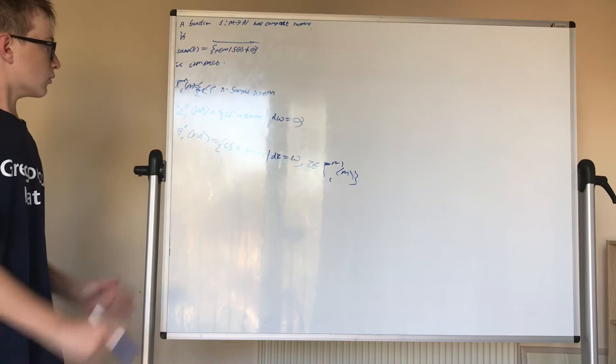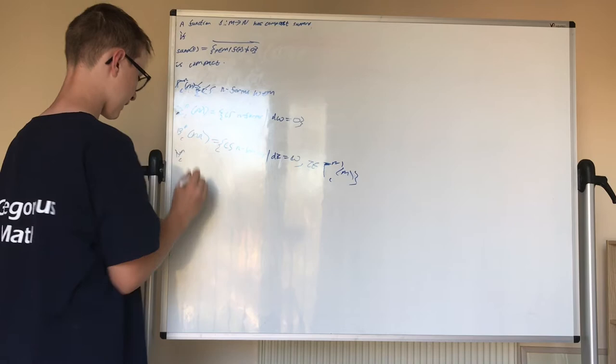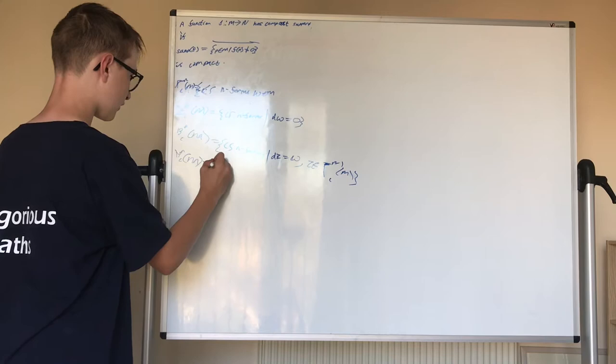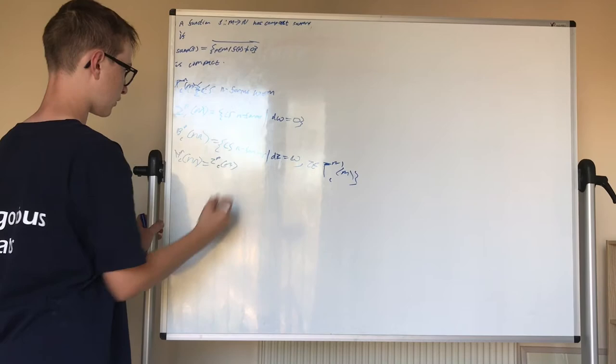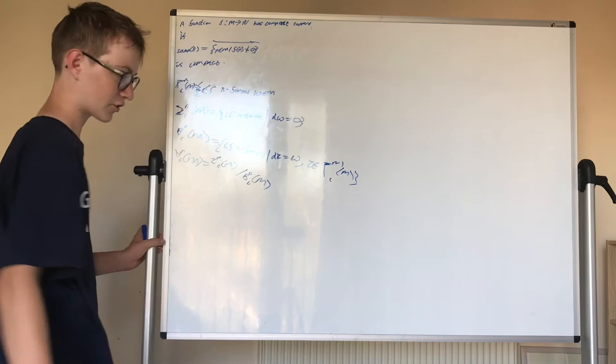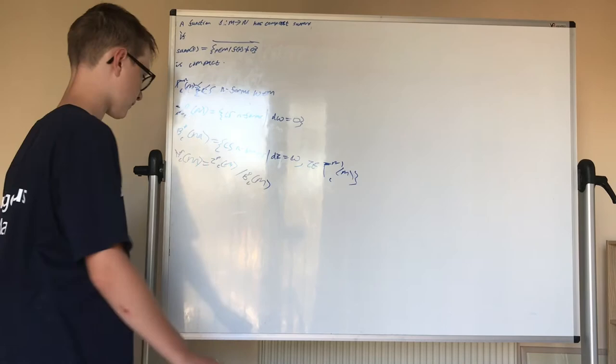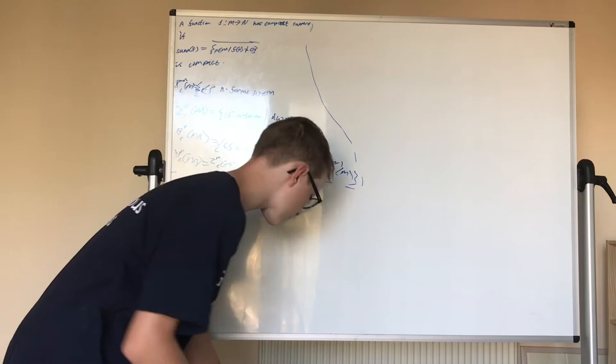Now, like last time, we're ready to define the de Rham cohomology, but this time it's compactly supported. So this is denoted H N with little C of M. This is equal to Z to the P sub C of M. I always get it mixed up, closed and exact. I think these are closed forms, and these are exact. It's this quotient group here. And now we can begin to investigate this group.